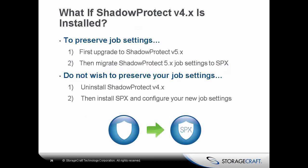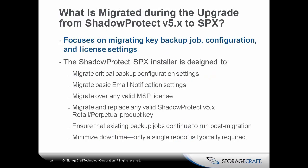What if you have Shadow Protect 4 installed? If you want to preserve the job settings in Shadow Protect 4, you'll first need to upgrade to Shadow Protect 5 and then migrate from Shadow Protect 5 to SBX. If you don't wish to preserve your job settings, you can uninstall Shadow Protect 4 and do a fresh install of SBX and configure your new job settings. What is migrated during an upgrade? It focuses on migrating key backup jobs, configuration, and license settings.